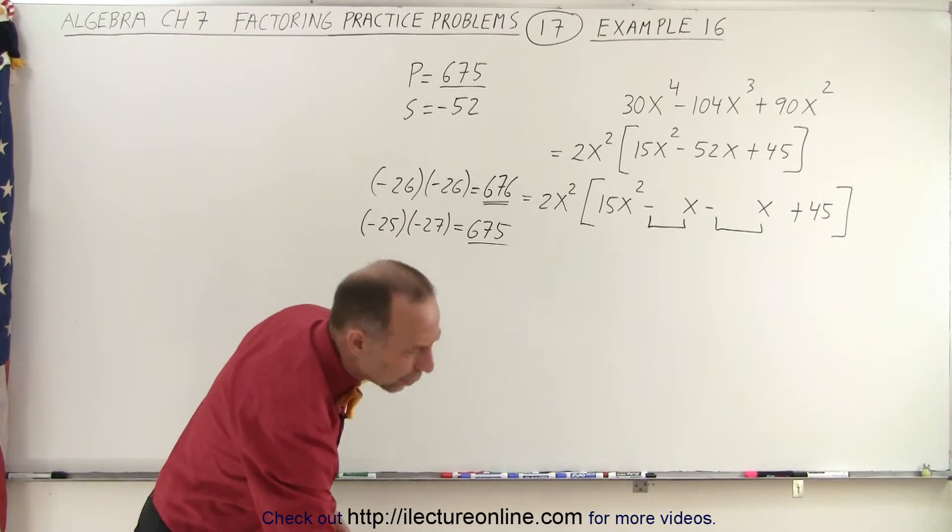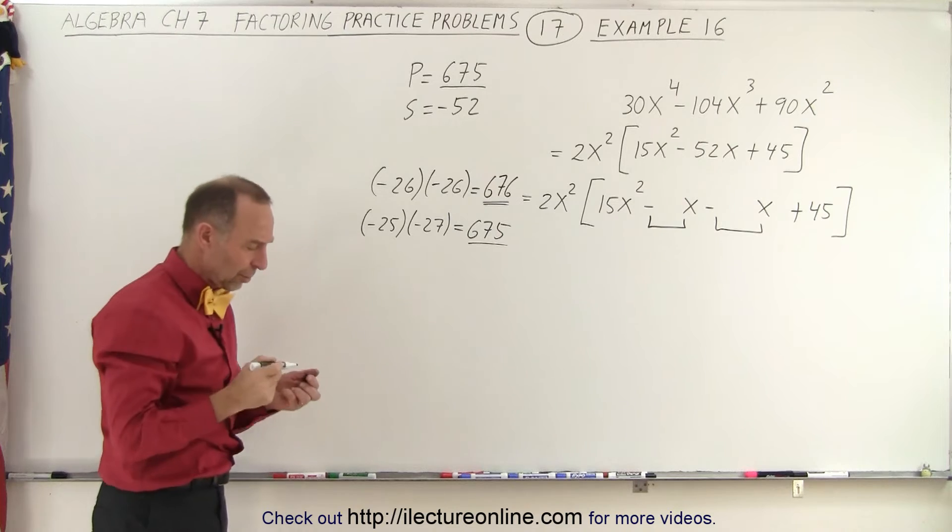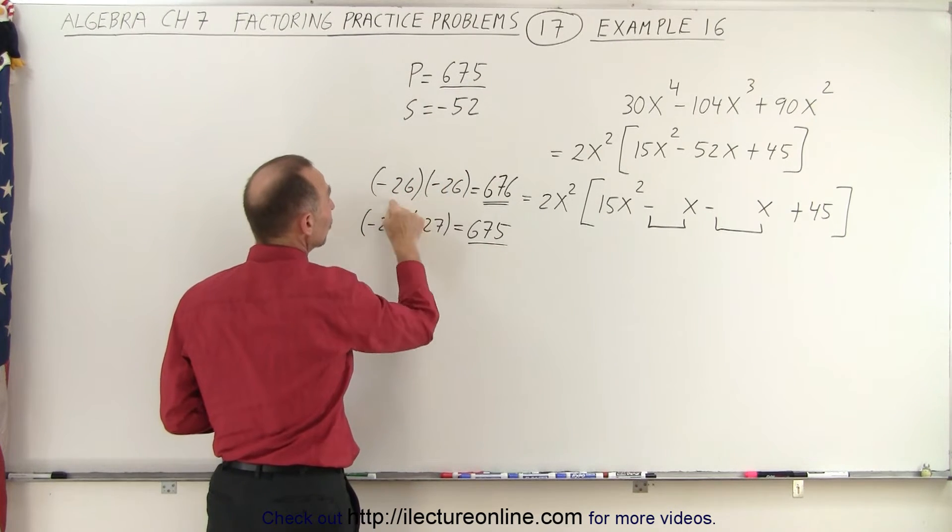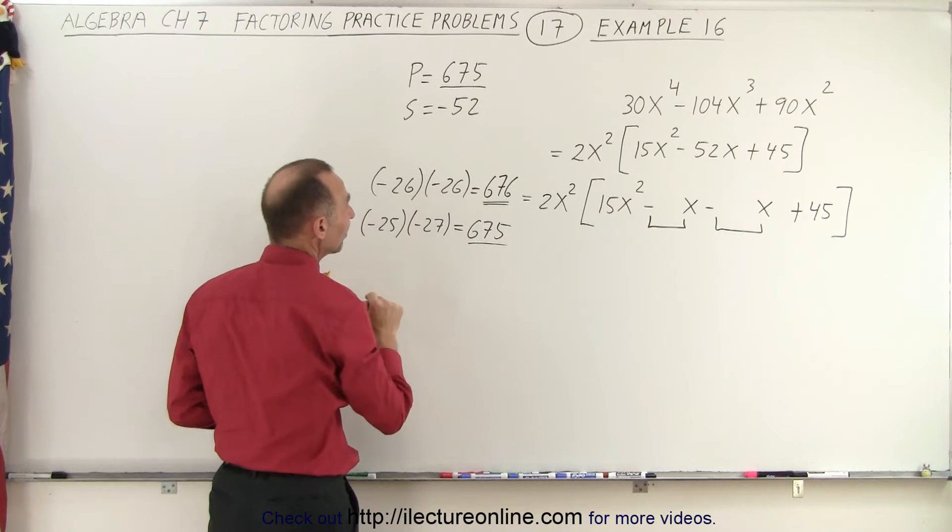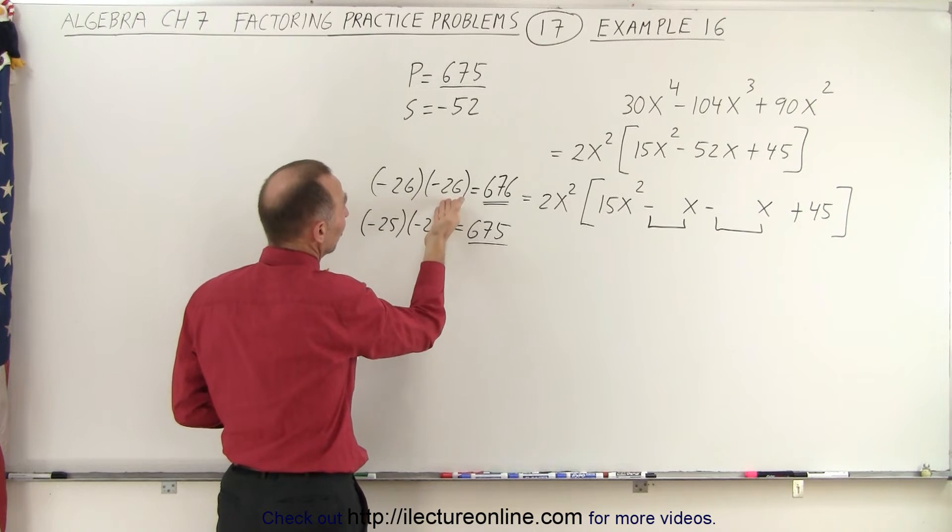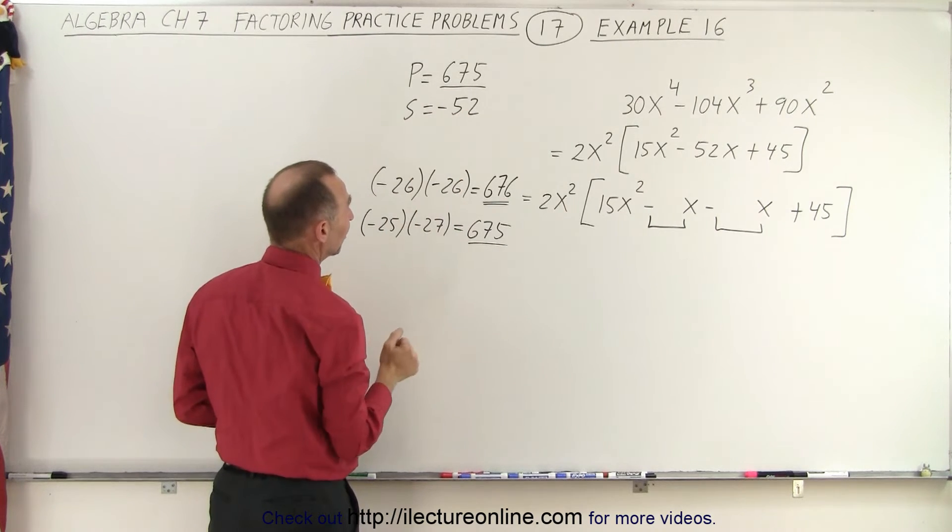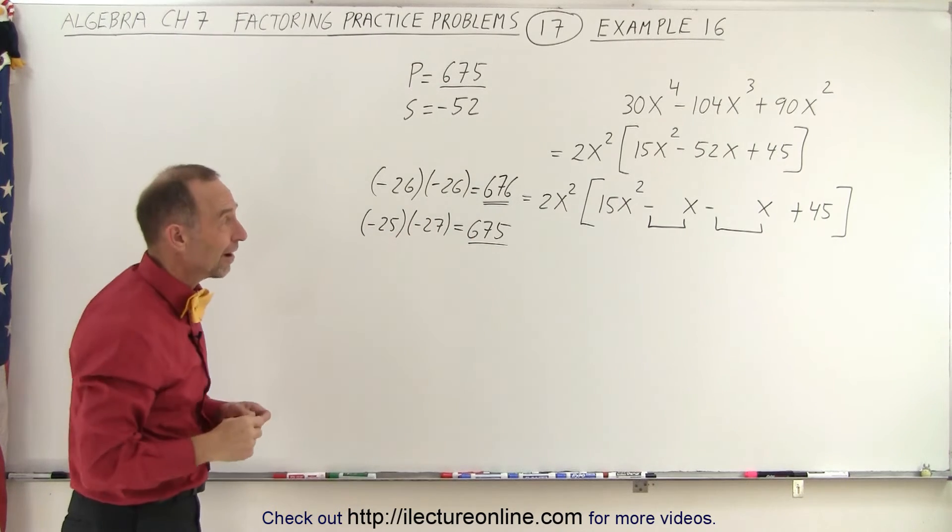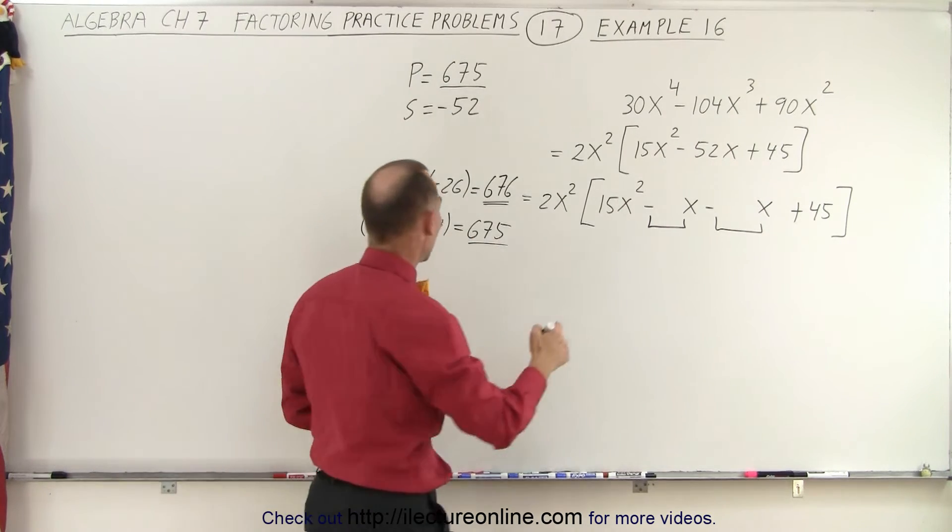So why did I know to start with these numbers rather than something else? Well, since the product was a really big number, I knew that the two numbers had to be close together in size. And so I tried 26 and 26 because that adds up to minus 52. But 25 plus 27 together add up to minus 52. And when I multiply, I get 675. So those are the two numbers I want.